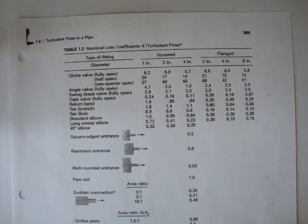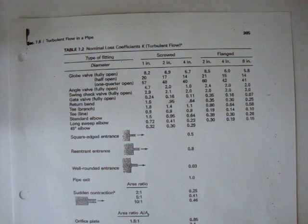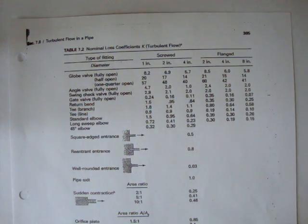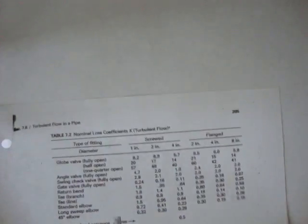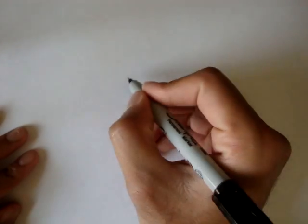Okay, in this video I want to show you something called a normal loss coefficient chart. It's a chart we use to figure out coefficients for the minor losses in our formula. Let me write that formula down.